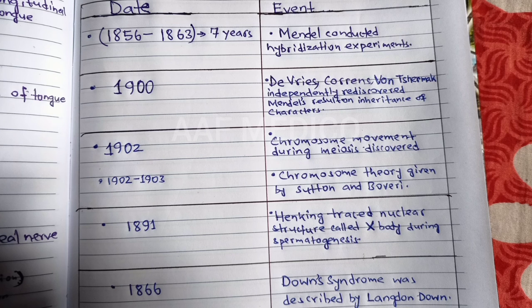Hello everyone. Today is the chapter: Important dates and events of genetics. In this video we will discuss important dates and events of genetics. Our first chapter means Principles of Inheritance and Variation.